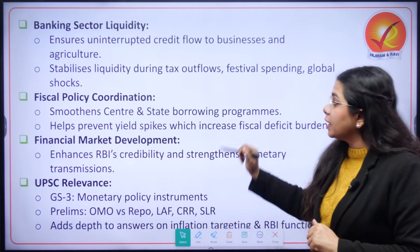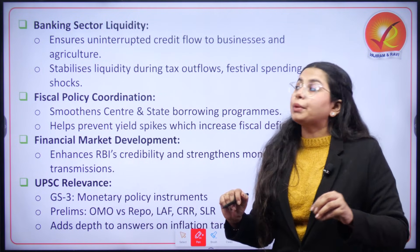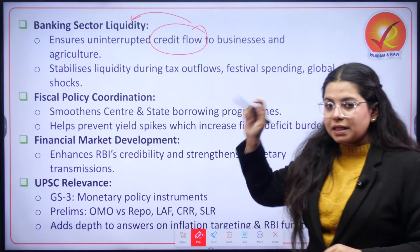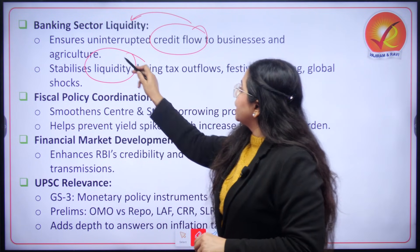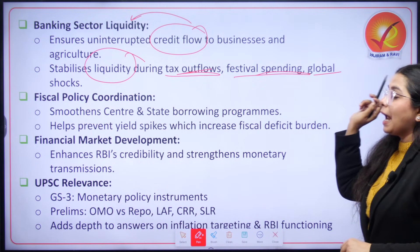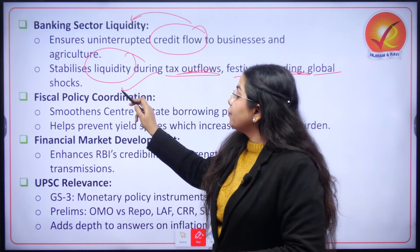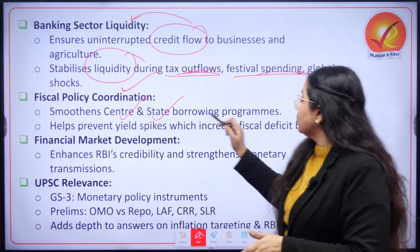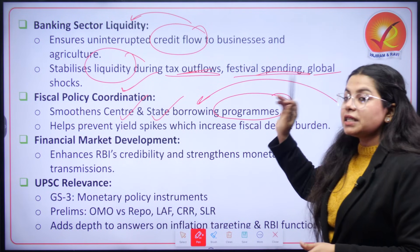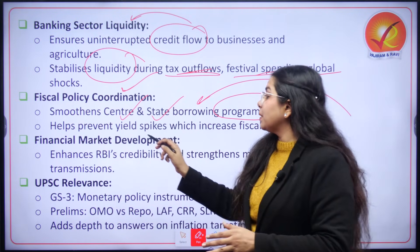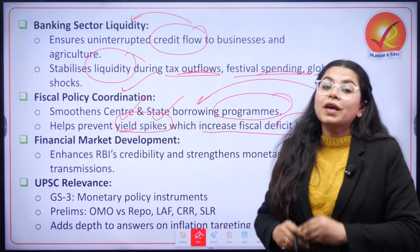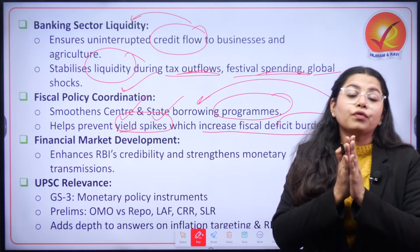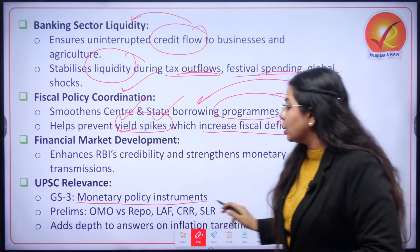Related to open market operations, banking sector liquidity is also impacted. OMOs ensure proper credit flow to businesses and agriculture. They stabilize liquidity especially during tax outflows, festival spending, and global shocks. They also play a huge role in fiscal policy coordination, helping in smoothening center and state borrowing programs, preventing yield spikes which increase fiscal deficit burden, and contributing to financial market development — making it directly relevant from the exam perspective when talking about monetary policy instruments.